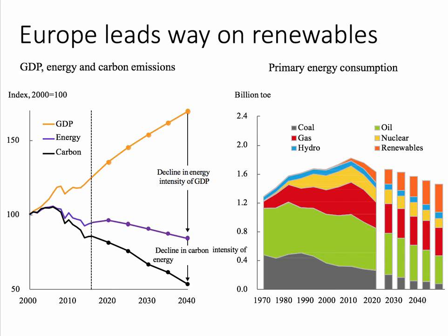The chart on the left-hand side is a projection from BP. The dotted line is where we are now in 2017. It projects what's going to happen to three things: first, the yellow line shows the projected level of GDP in the European Union on an index basis, which is set to rise. But the other two lines head in the opposite direction — the amount of energy consumed is projected to fall, showing a growing divergence between energy consumption and GDP. In other words, energy per unit of GDP is falling — we call that a decline in energy intensity. The black line shows projected carbon emissions, forecast to fall even further, meaning Europe is expected to make a significant move towards a lower-carbon economy.